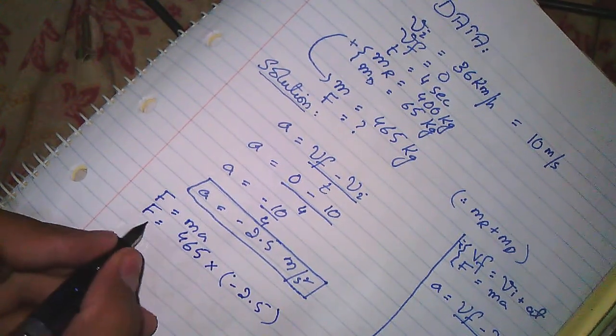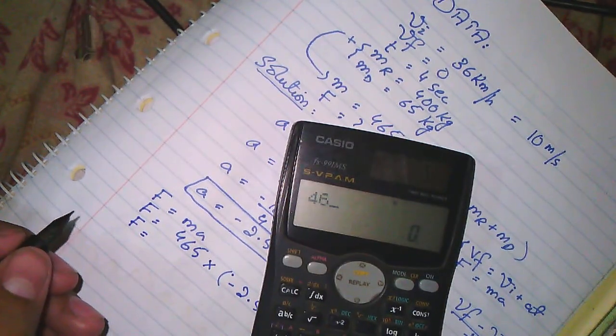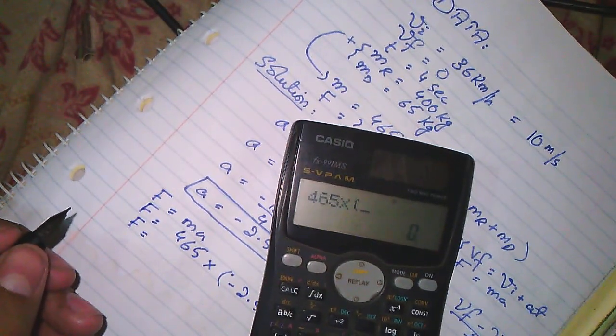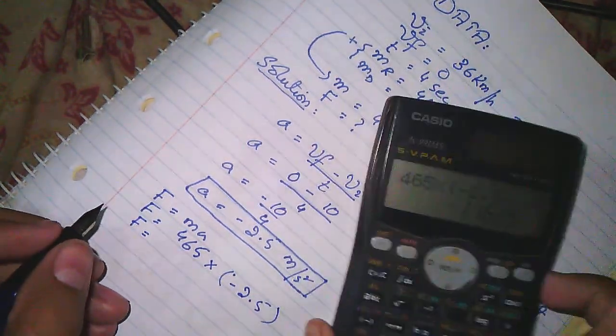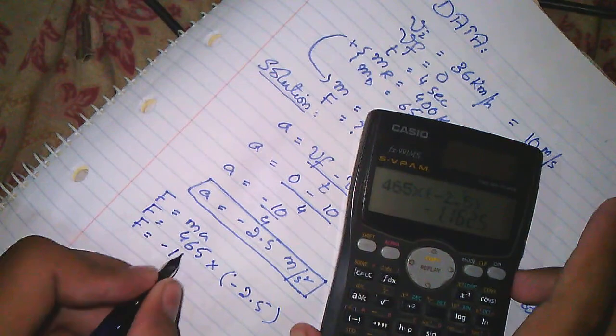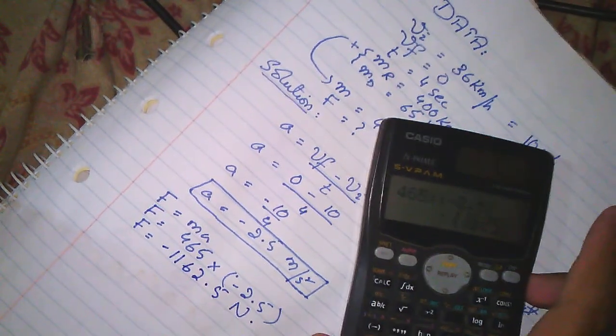The answer will be 465 multiplied by minus 2.5, which equals minus 1162.5 Newton.